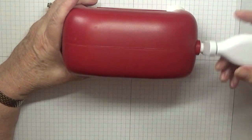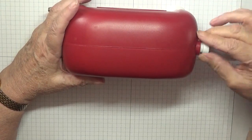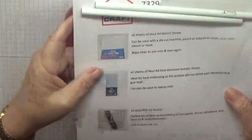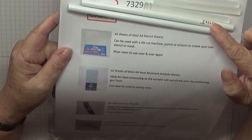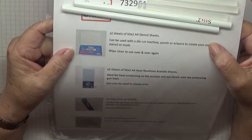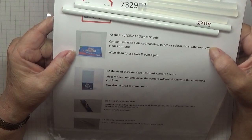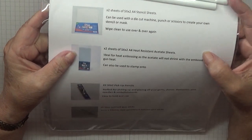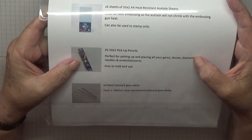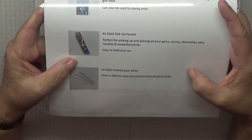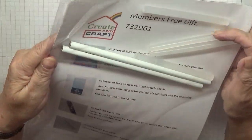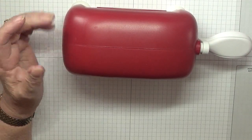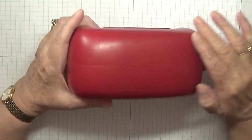So I think the lucky bag was worth it. They're saying that we had 135 pounds worth of stuff. We also got this, so you got two of them, sticky pickup pens, four glue sticks, two sheets of stick-it to A4 stencil sheets, two sheets of stick-it to A4 heat-resistant acetate sheets, two pickup pencils and four glue sticks in this pack. So I think that little lucky bag was well worth the 20 pounds.